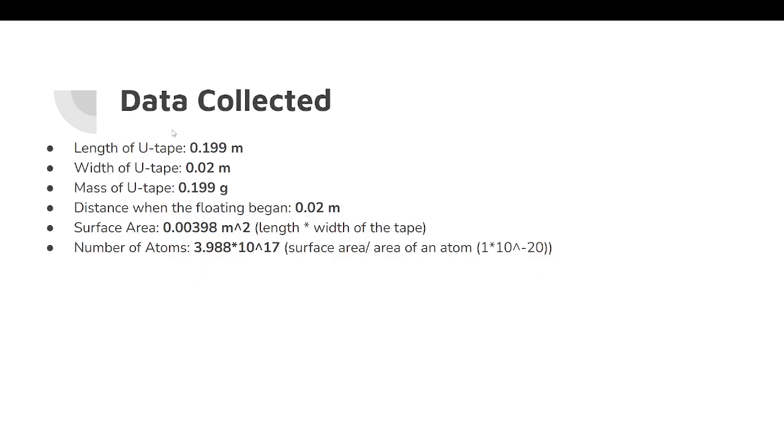The data that we collected was that the length of the U-shaped was 0.199 meters, the width was 0.02 meters, the mass was 0.199 grams, the distance when the floating began was 0.02 meters, and the surface area was 0.00398 meters squared. Therefore, we were able to get the number of atoms by dividing that by the area of an atom, and we got 3.988 times 10 to the 17th atoms.